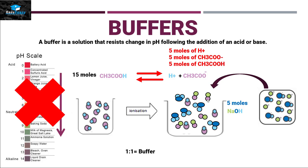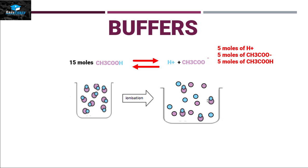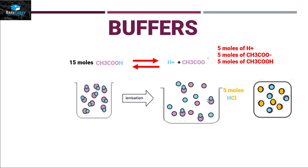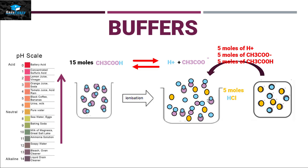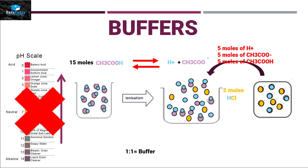Now let's add a strong acid and see how the buffer resists pH change. Again taking 15 moles of acetic acid dissociating into 5 moles of H⁺ and 5 moles of acetate ion, this time adding 5 moles of HCl. HCl completely dissociates into 5 moles of H⁺ and 5 moles of Cl⁻. The H⁺ from HCl bonds with the acetate ions already in solution, and the chloride ions remain. Since pH change depends on H⁺ concentration, there is no increased H⁺ in solution and no drastic pH change. The ratio is again 1:1 — this is a buffer.